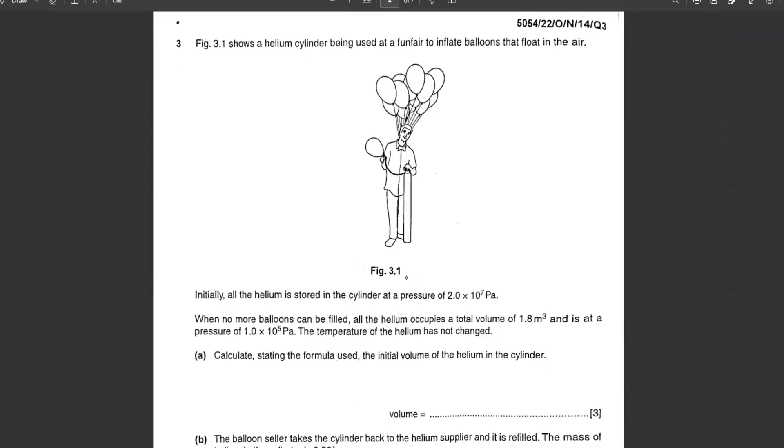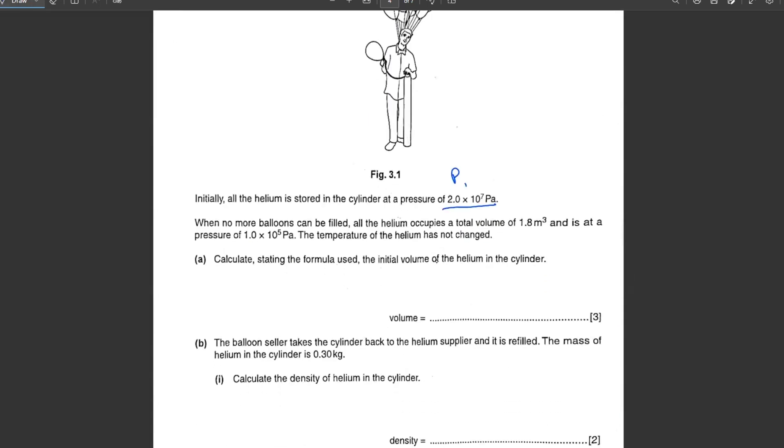Figure 3.1 shows a helium cylinder used at a funfair to inflate balloons. Initially, all the helium stored in the cylinder is at pressure P1. When no more balloons can be filled, the helium occupies total volume V2 at pressure P2. The temperature remains unchanged. That means Boyle's law will be applied. Calculate, stating the formula used, the initial volume of the helium. We will say P1V1 equals P2V2. 2 × 10^7 × V1 equals 1 × 10^5 × 1.8.